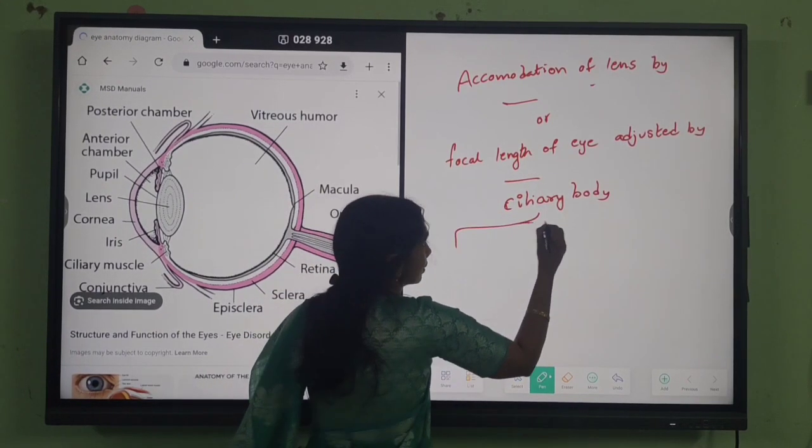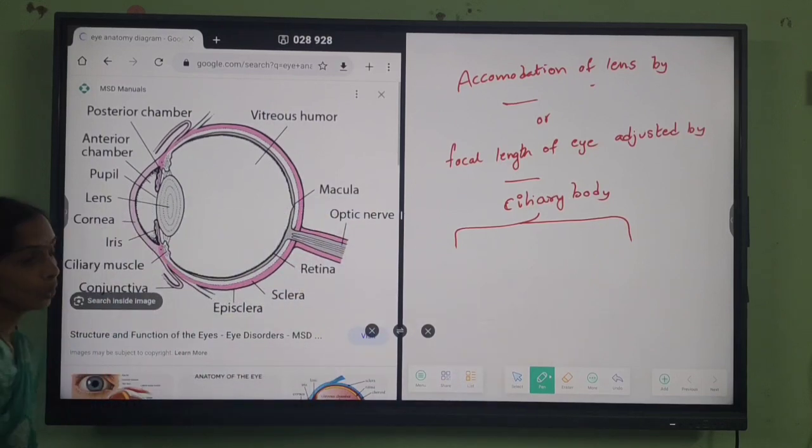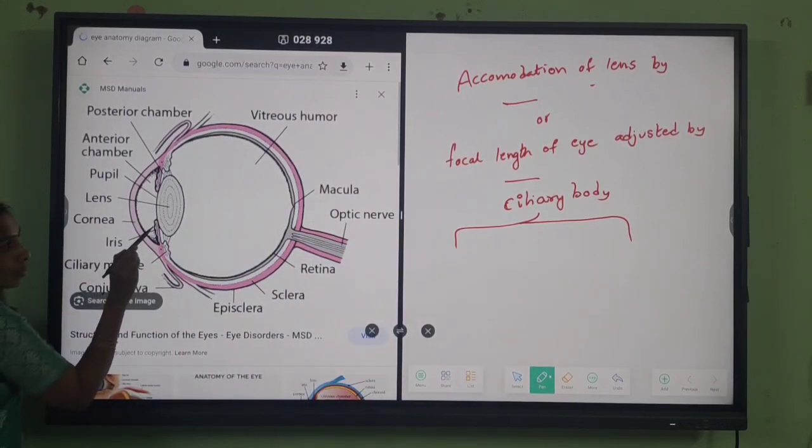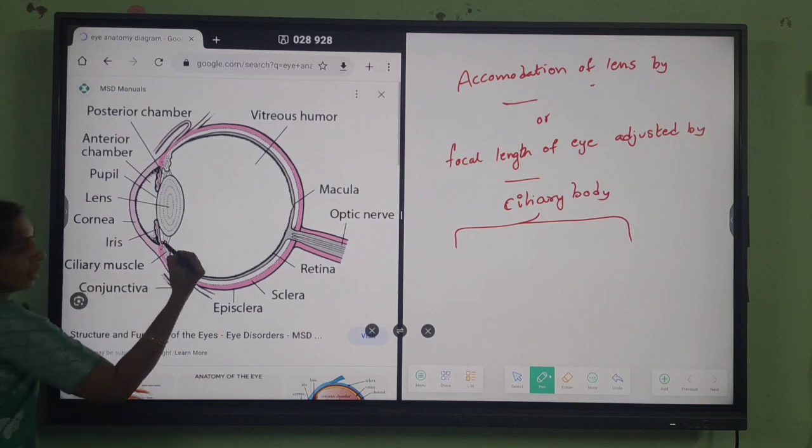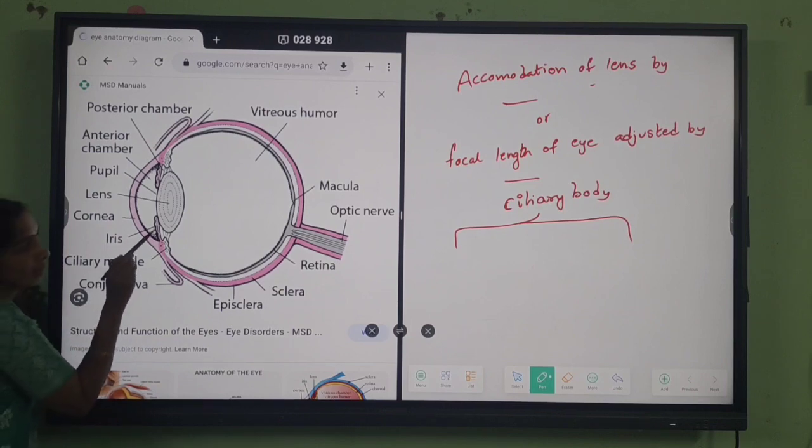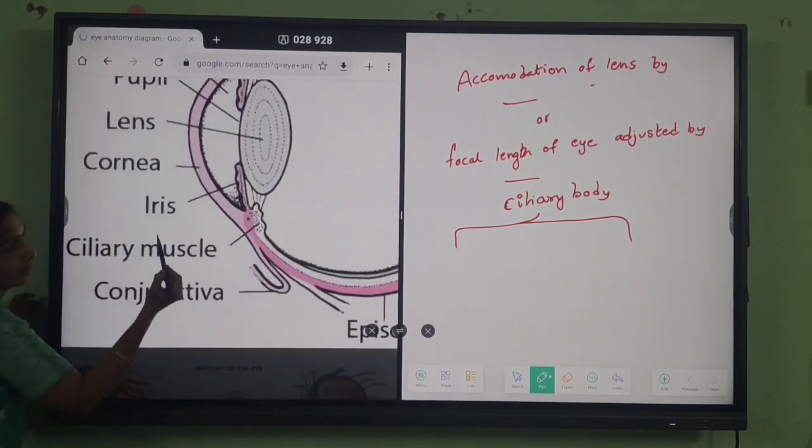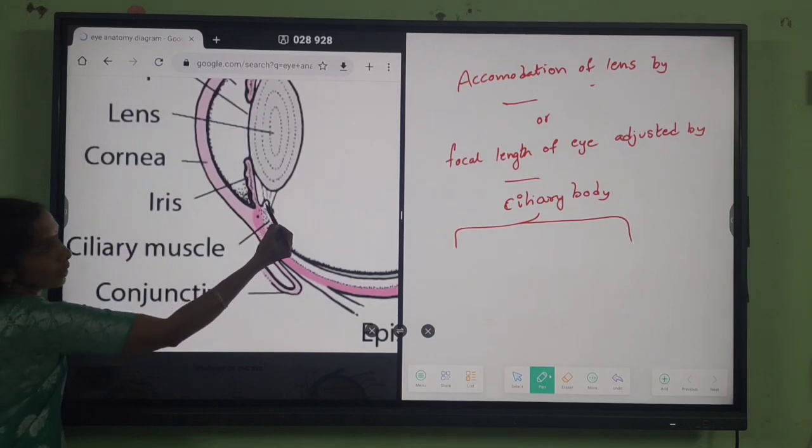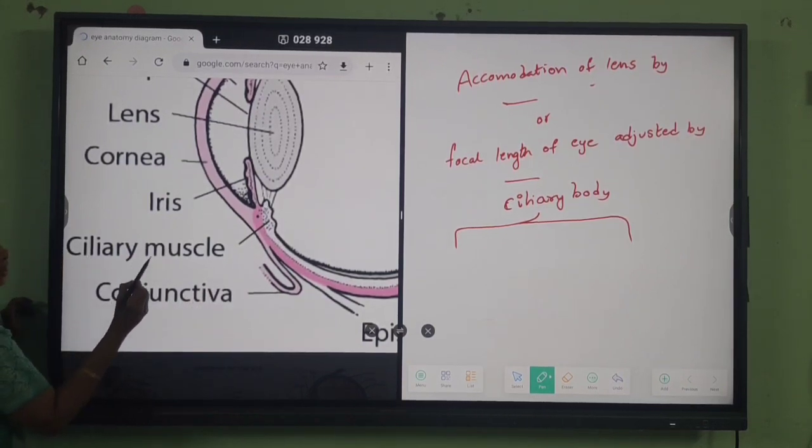Ciliary body is divided into two portions. One is pink color, you can see that is iris, and this white color portion is called ciliary muscle. Once again, the pink area is iris and this white area is called ciliary muscle.